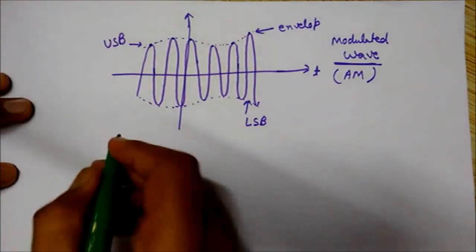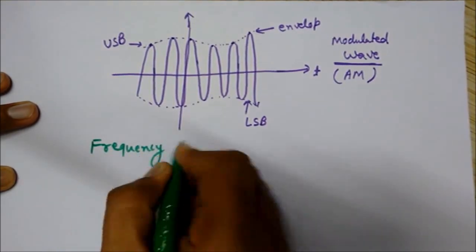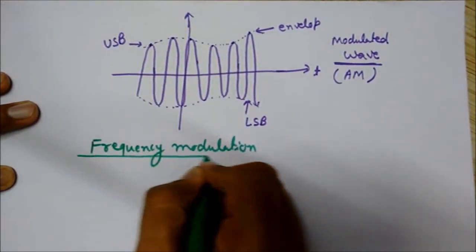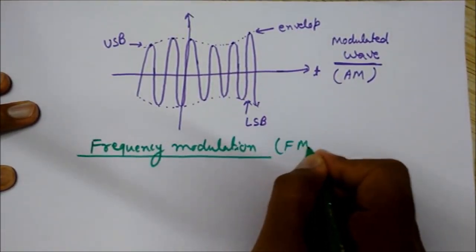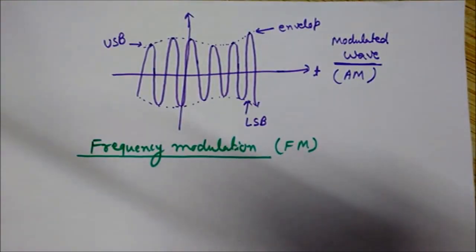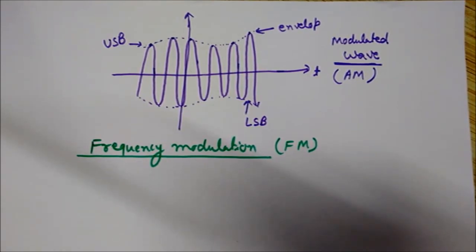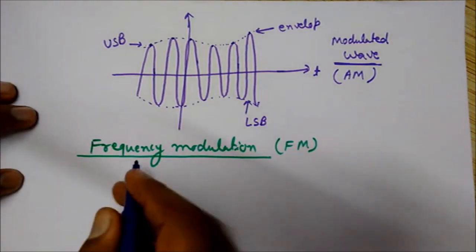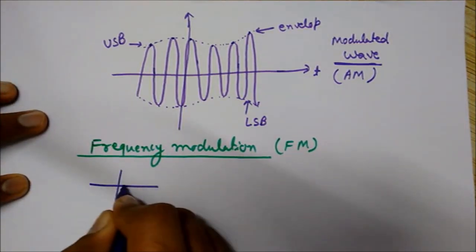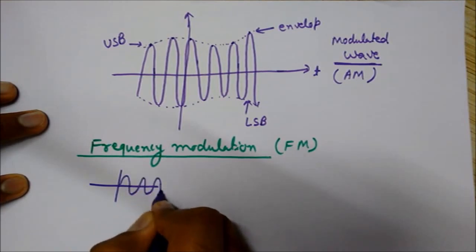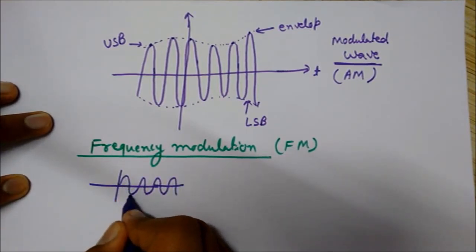Frequency modulation — what is frequency modulation? It is denoted by FM. Before understanding frequency modulation, we will first understand what frequency is. The frequency of a wave means the number of complete wave cycles passing per second. It is also denoted by 1 divided by T.